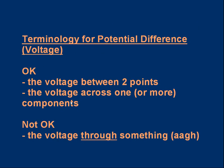A little note on terminology about potential difference or voltage. It is okay to say the voltage between two points is something or the voltage across one or more components is something. But it is not okay to talk about the voltage through something. Current passes through things but voltage is not something that passes through something. A voltage exists between two points or across a component between the two sides. So please avoid using terms like voltage through.